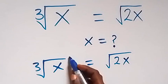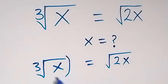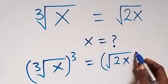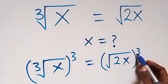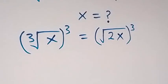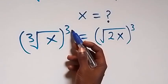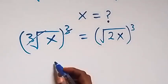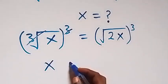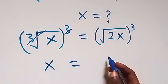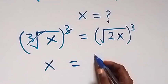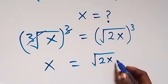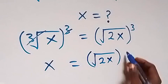Let's raise both sides to power 3 — raise this side to power 3 and raise this side as well to power 3. Then the power of 3 cancels the cube root, and we are left with x here, which is equal to square root of 2x raised to power 3.